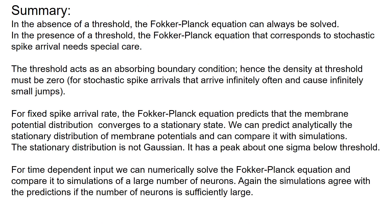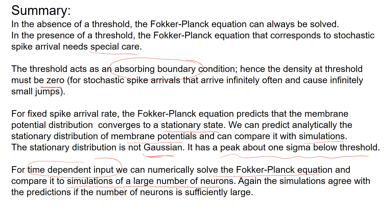In summary, in the absence of a threshold the Fokker-Planck equation can always be solved, but in the presence of a threshold we need to take special care. We think of the threshold as an absorbing boundary, and the density at threshold must be zero. For fixed spike arrival rate we can look at the stationary state and predict analytically the stationary distribution of membrane potentials — it is not Gaussian, it must be zero at threshold, and its peak is roughly one sigma below the threshold. For time-dependent input we can numerically solve the Fokker-Planck equation and compare with simulation of a large but finite number of neurons, with excellent agreement. The Fokker-Planck equation provides a powerful tool for understanding neuronal dynamics.